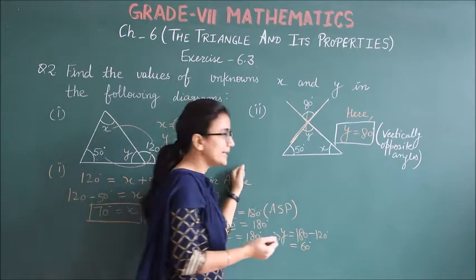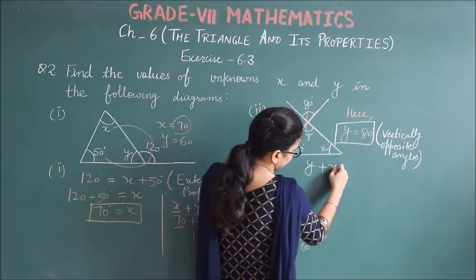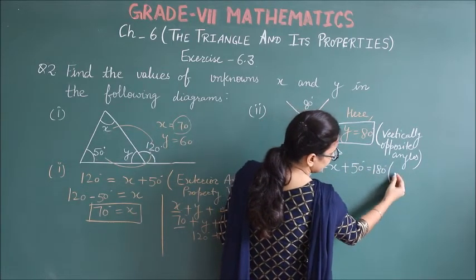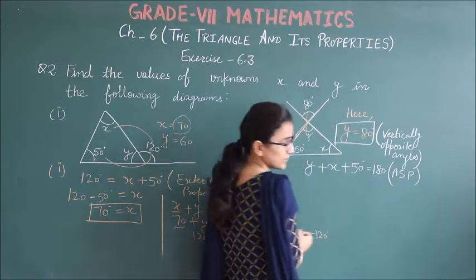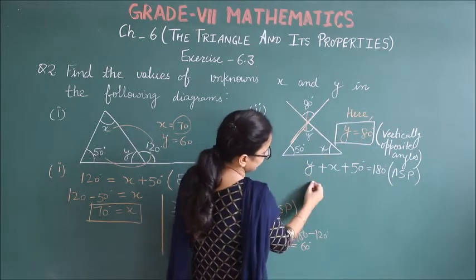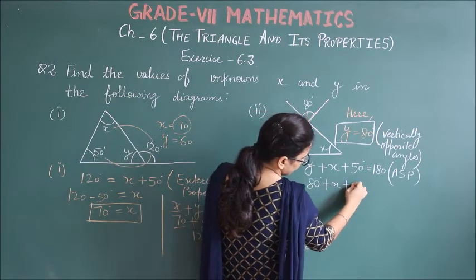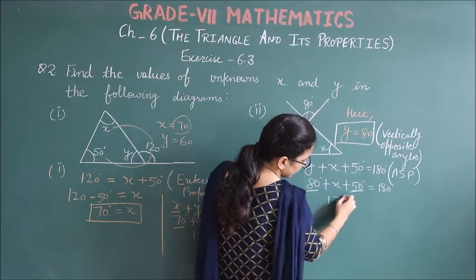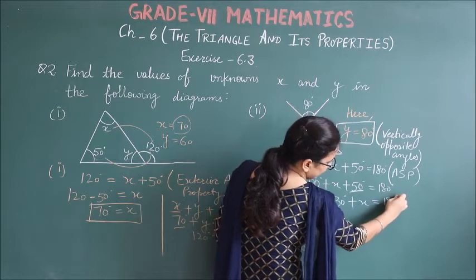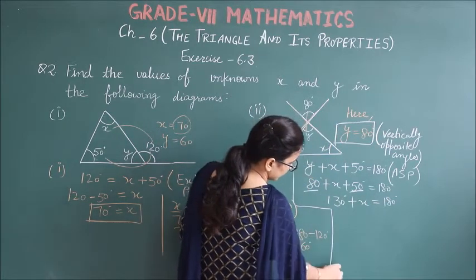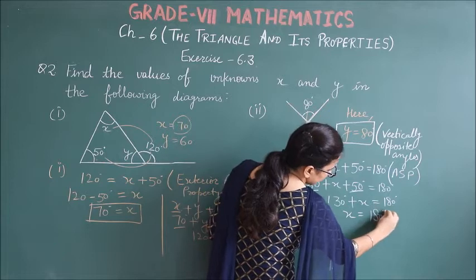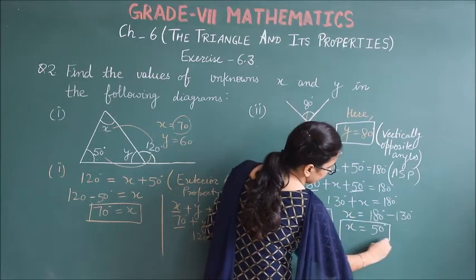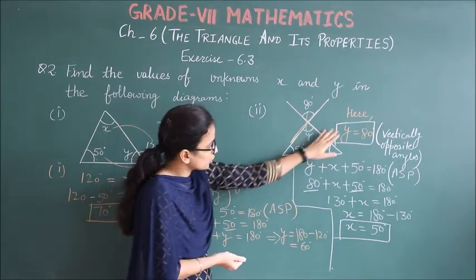The sum of the three is 180 degrees. So y plus x plus 50 degrees is equal to 180 using angle sum property. y is 80 degrees plus x plus 50 equals 180. 80 and 50 is 130 degrees plus x equals 180 degrees. So x is equal to 50 degrees. So x value is 50.